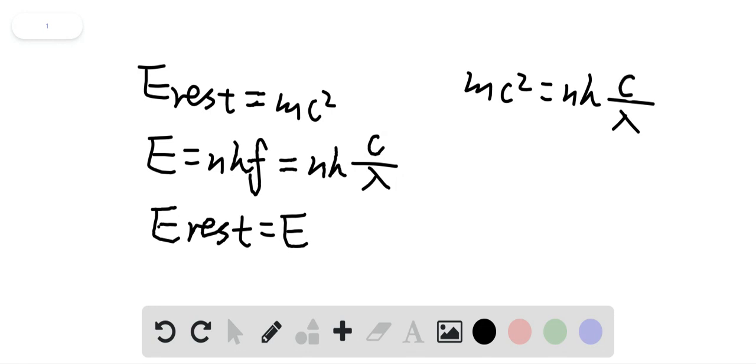Okay, if we move n on the left side, that will give us mc squared lambda divided by hc. So c cancels out, only one c left over on the top. So n is equal to mc lambda divided by h.